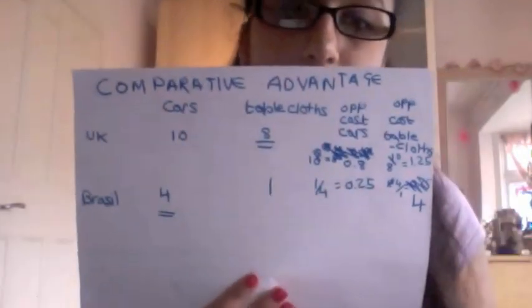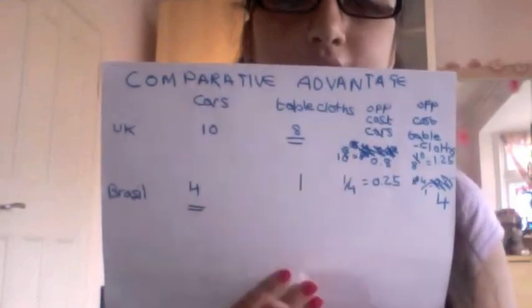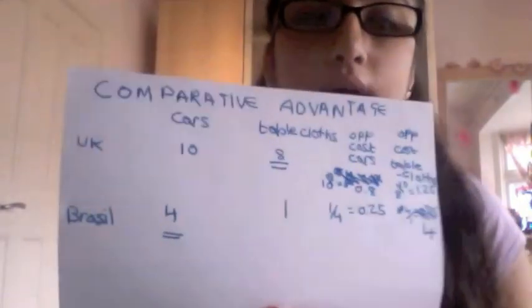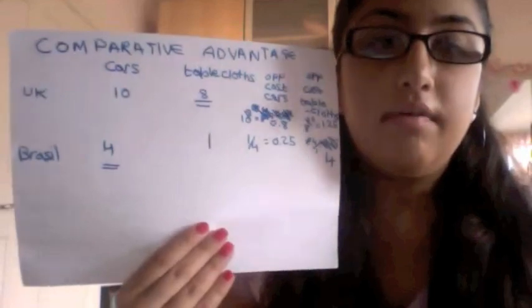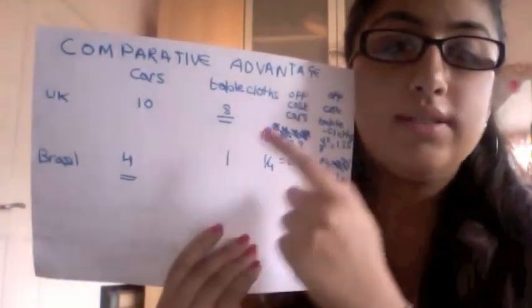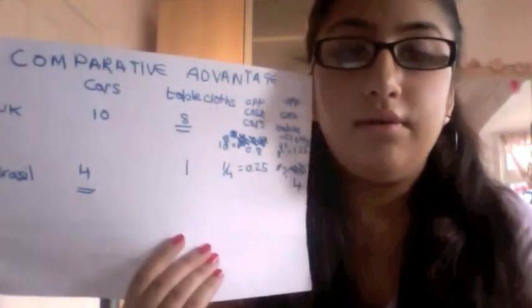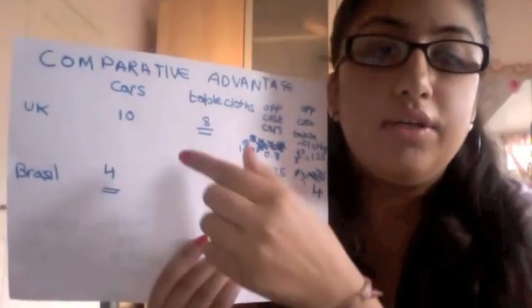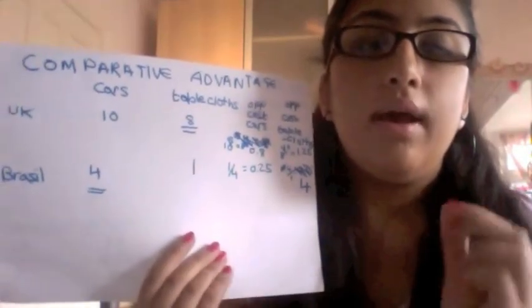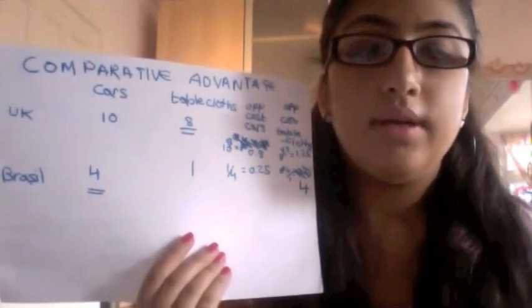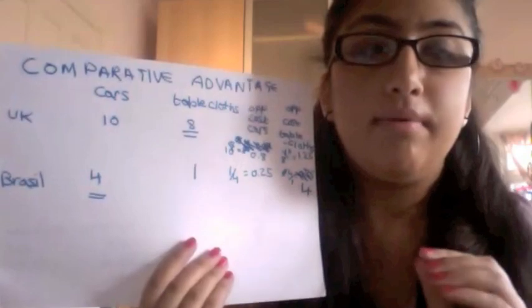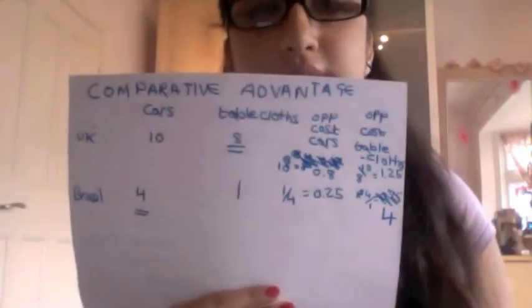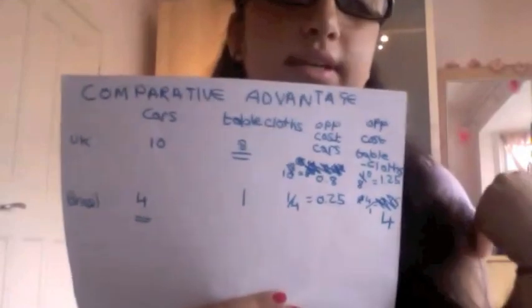These figures are chosen as an example, but they can reflect reality because some countries lack the technology or skilled labour. Without any trade, world output would be 14 cars and 9 tablecloths. Looking at absolute advantage, the UK has absolute advantage in both products over Brazil, so the UK would need to produce both and Brazil would have zero output. With absolute advantage, world output of cars would be 10 and tablecloths would be 8 — which is actually worse than before, since world output was previously 14 cars and 9 tablecloths.